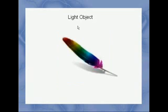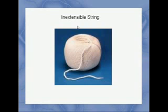A light object is one where the mass of the object is very small in comparison to the masses of the other objects. An inextensible string is a string that does not stretch — it stays the same size under load.